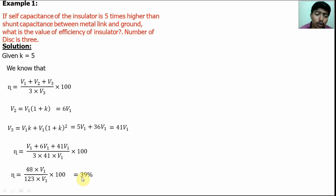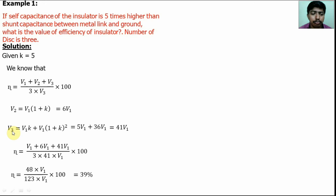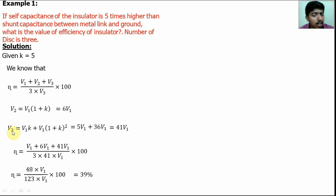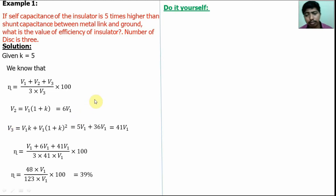If you don't remember the formulas for voltage across each disk — V2 and V3 — you cannot calculate efficiency. So remember these formulas. Note them down, and when going to write an examination, recall these formulas — they will help you get good marks.